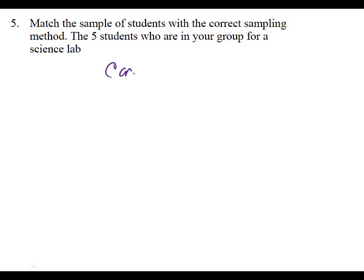We are supposed to match the sample of students with the correct sampling method — this is the lesson you had to do on your own. The five students who are in your group for a science lab — if you're going to just grab and sample them, what kind of sample is that? Convenience. It's a convenience sample because you just grab the five closest people and ask them questions.